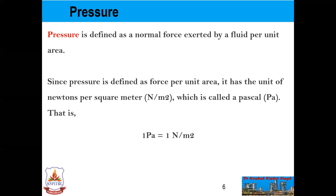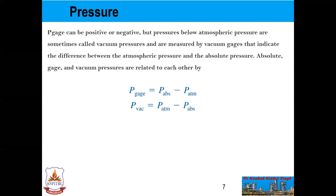Most pressure measuring devices are calibrated to read zero in the atmosphere, so they indicate the difference between the absolute pressure and the local atmospheric pressure — this difference is called the gauge pressure. Pressures below atmospheric pressure are sometimes called vacuum pressure and are measured by vacuum gauges, which indicate the difference between atmospheric pressure and absolute pressure. So P-gauge equals P-absolute minus P-atmospheric, and P-vacuum equals P-atmospheric minus P-absolute.